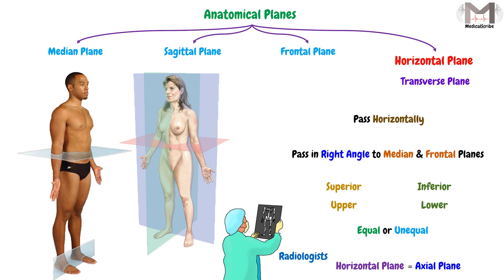So these are the 4 imaginary planes that anatomical body structures are described based on. I hope what I said makes sense. See you in the next video, goodbye.